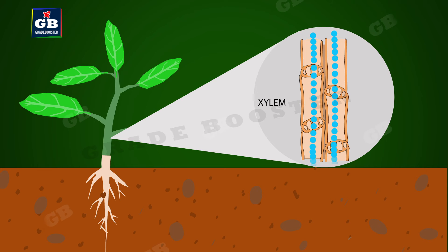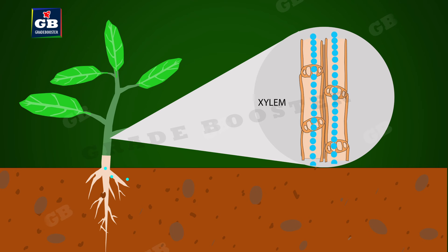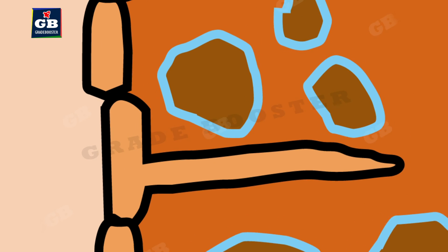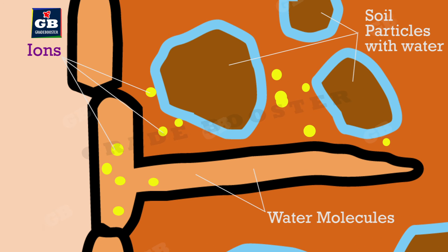Xylem consists of vessels and tracheids, through which roots, stems, and leaves are interconnected to form a continuous system of water-conducting channels. At the roots, cells in contact with the soil actively take up ions. This creates a difference in the concentration of these ions between the root and the soil, so water moves into the root from the soil to eliminate this difference.